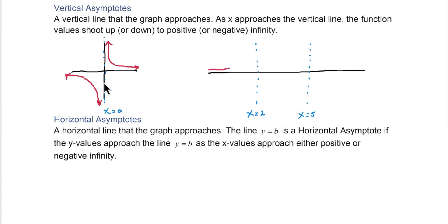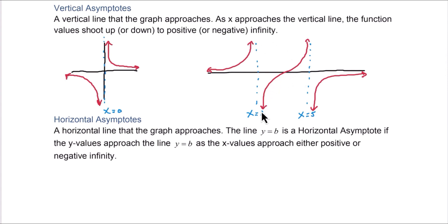It is possible to have more than one asymptote. We have two vertical asymptotes in this case. As the graph approaches x equals 2, it shoots up to positive infinity from the left, and down to negative infinity from the right. Those curves approach the line but never touch it. The same thing occurs at x equals 5: the graph approaches but never touches, shooting up or down to infinity on each side.